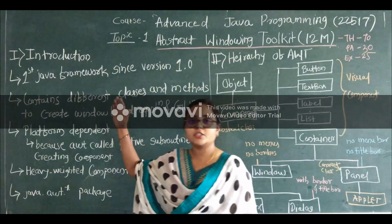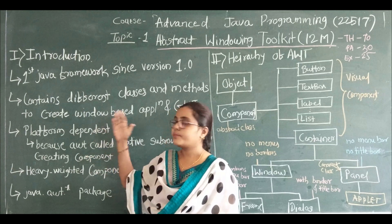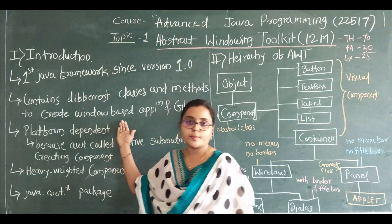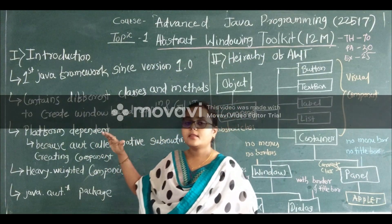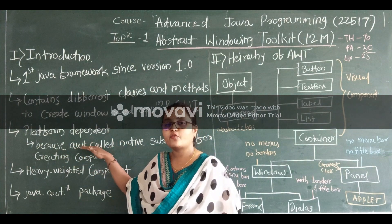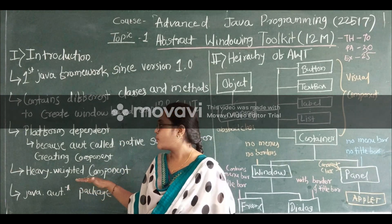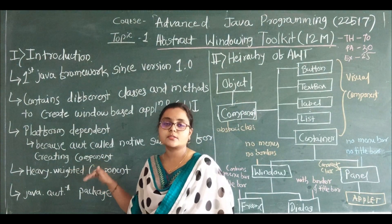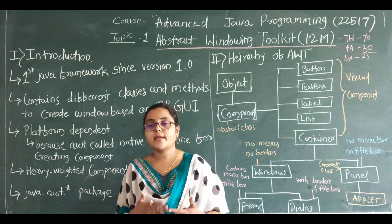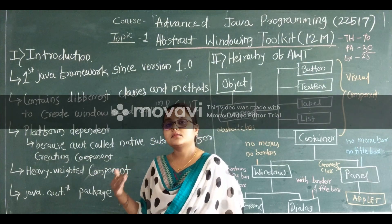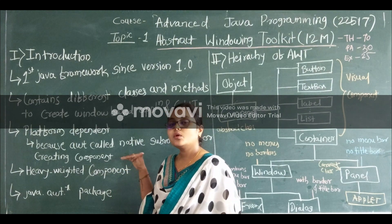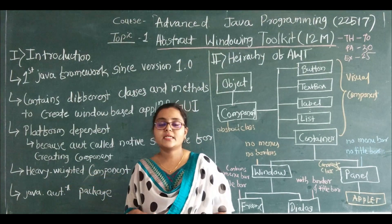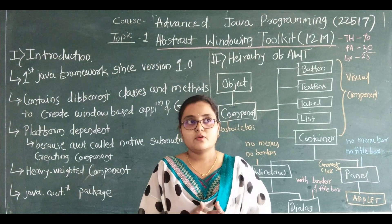In brief, today we learned some features of AWT. It is the first framework of Java since version 1.0. It is used to create window-based applications and GUI. The most important feature is that it is platform dependent because AWT calls native subroutines to create components — button, text box, label, and so on. It calls subroutines of the operating system, so the nature of AWT becomes heavyweight, which is why it is rarely used now.